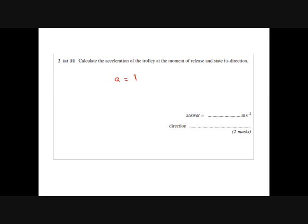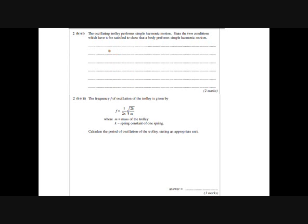To work out the acceleration of the trolley, this is fairly straightforward: acceleration = force / mass. The resultant force is 3.6 N and the mass is 0.8 kg, giving 4.5 metres per second squared to the right. Two conditions for simple harmonic motion: acceleration is proportional to displacement, and the minus sign indicates it's in the opposite direction.